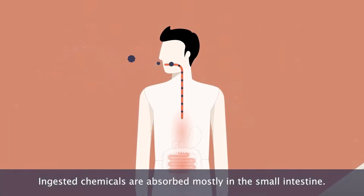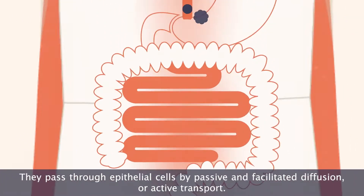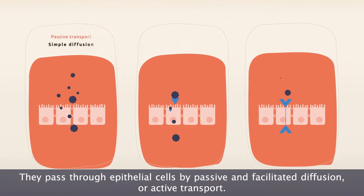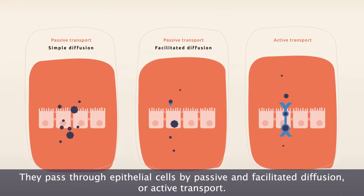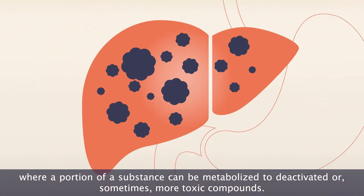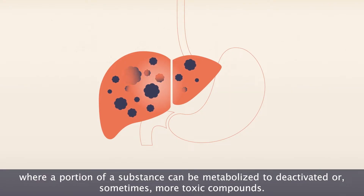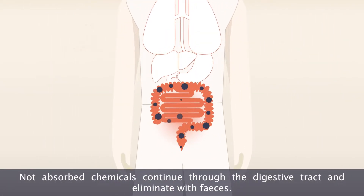Ingested chemicals are absorbed mostly in the small intestine. They pass through epithelial cells by passive and facilitated diffusion, or active transport. With the bloodstream, chemicals are transported into the liver, where a portion of a substance can be metabolized to deactivated or sometimes more toxic compounds. Not absorbed chemicals continue through the digestive tract and are eliminated with feces.